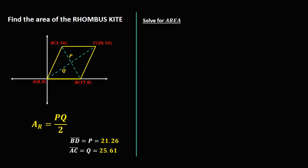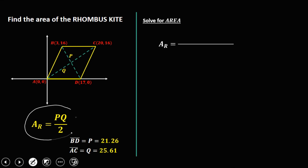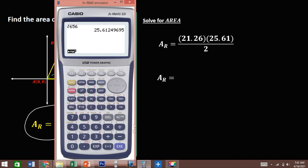So we can solve now the area of this rhombus kite. Substitute the values using the formula. P is 21.26 and Q is 25.61, divided by 2. So the area — 21.26 times 25.61, divided by 2 — gives us the area of the given rhombus kite: 272.23.